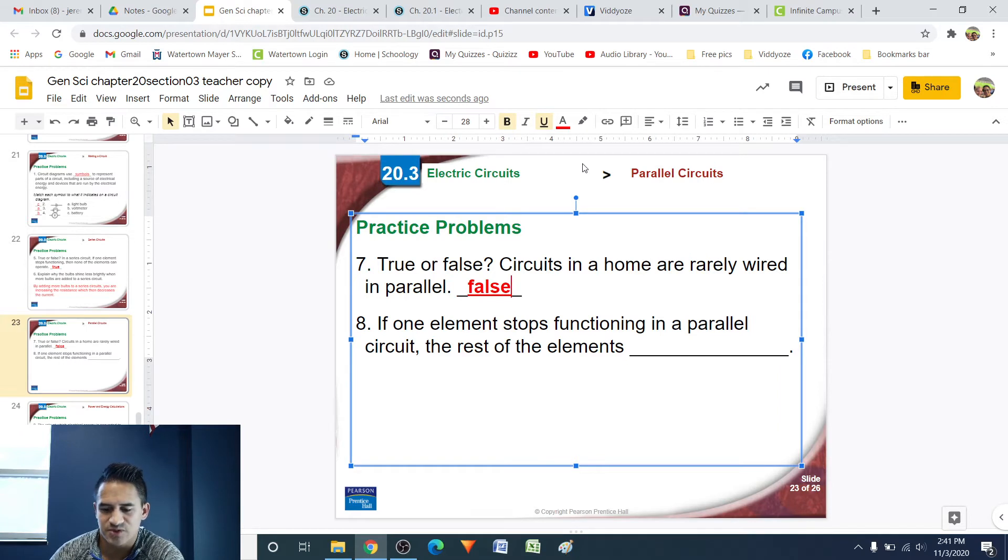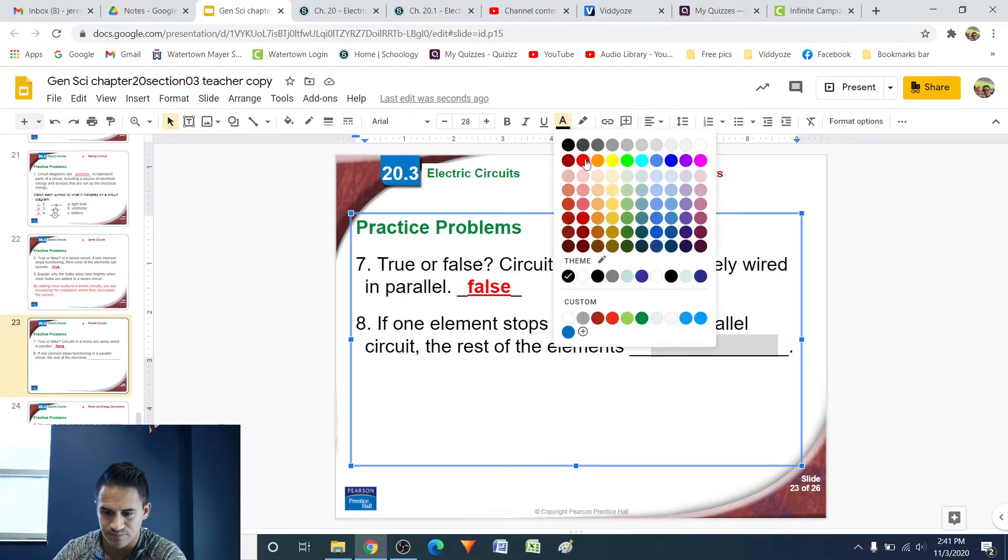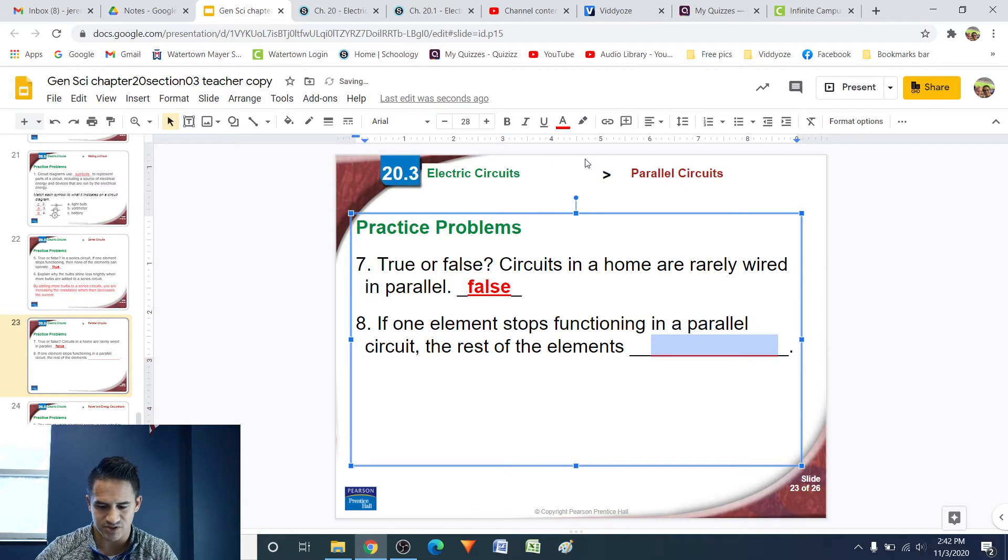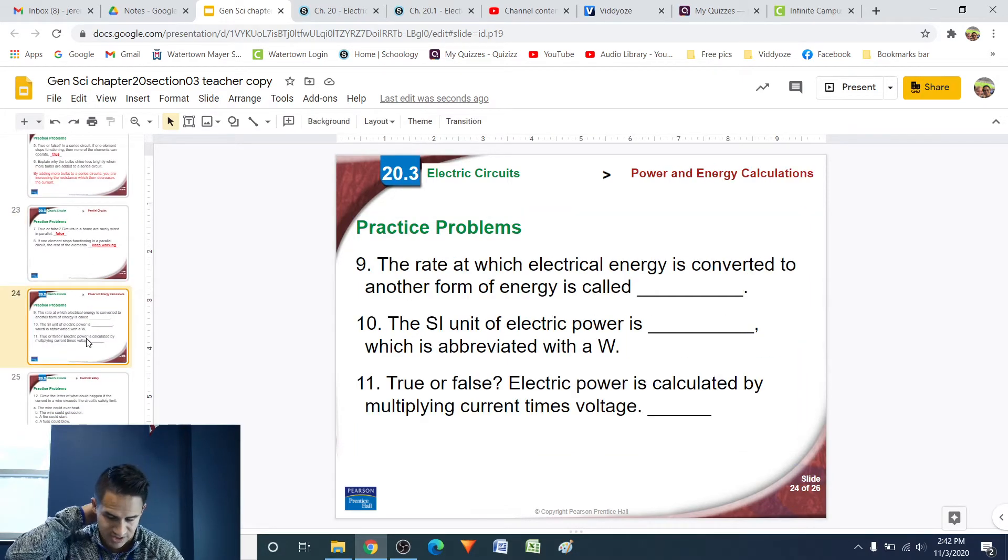Number 8, if one element stops functioning in a parallel circuit, the rest of the elements, so we actually answered this one just a few questions ago, but if one element in a parallel circuit stops functioning, the rest of the elements keep working. It's not like a series circuit, if one part goes out in a parallel circuit, there's other pathways for the electrons to travel through, in which case those objects just continue getting powered. It's just that one part stops working.